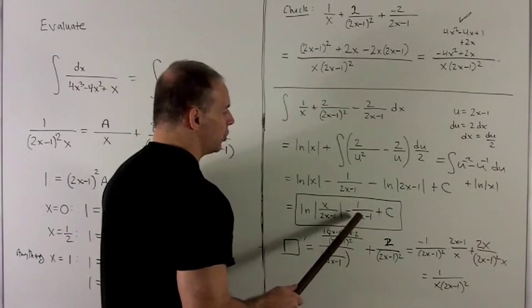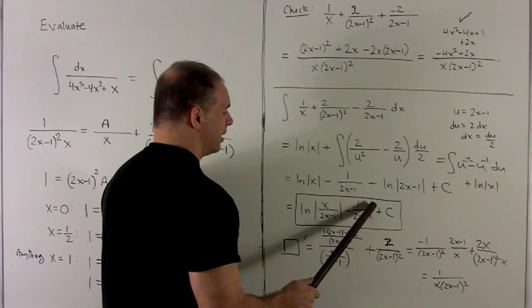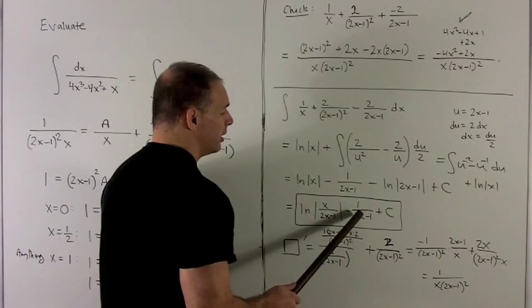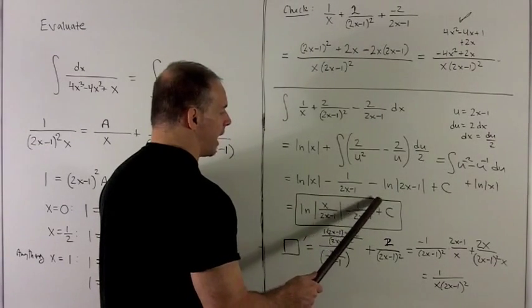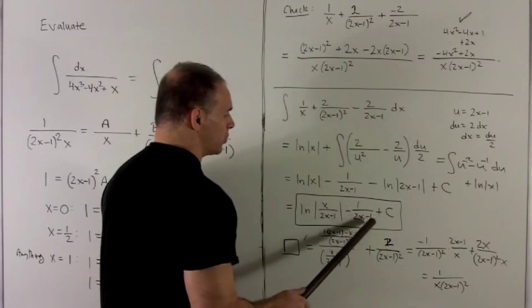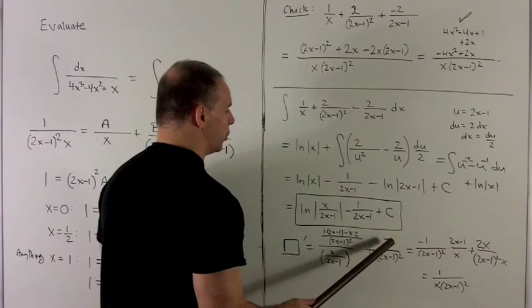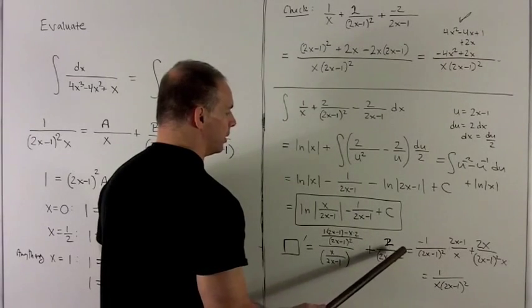For this term, this is just 2x minus 1 to the minus 1. So to bring the minus 1 down, it's going to turn into a plus. That minus 1 exponent is going to turn into a minus 2. And then chain rule says we multiply in the inside by a 2. So that's just going to give me 2 over 2x minus 1 squared.